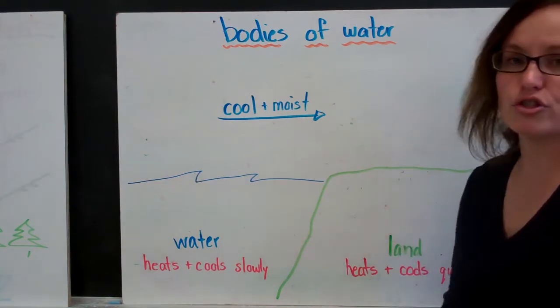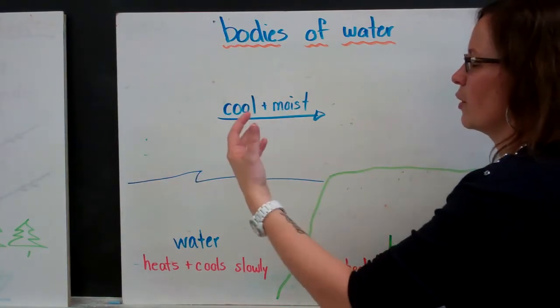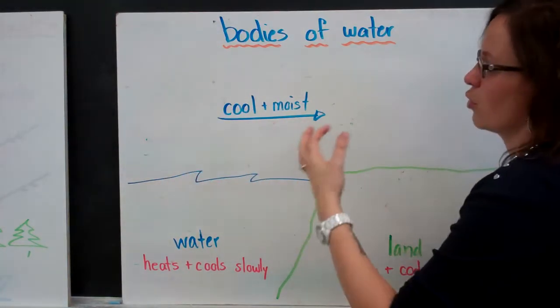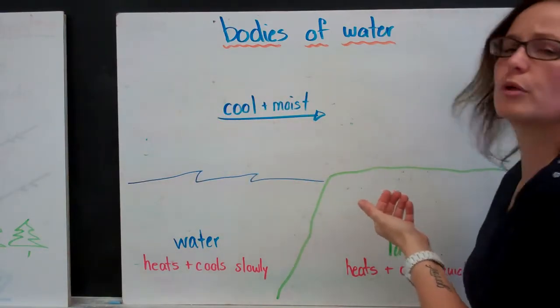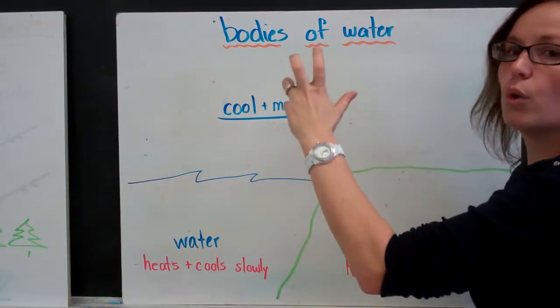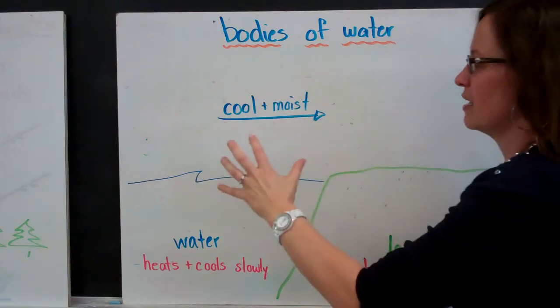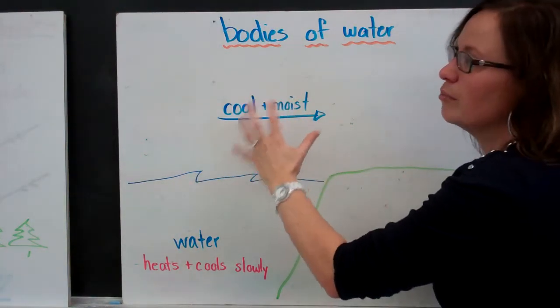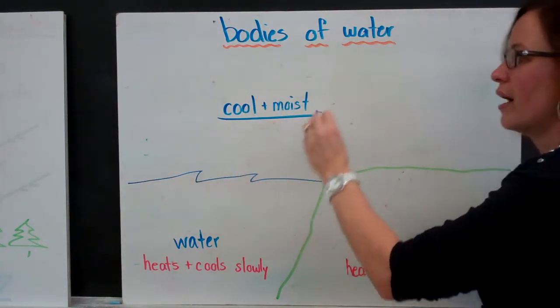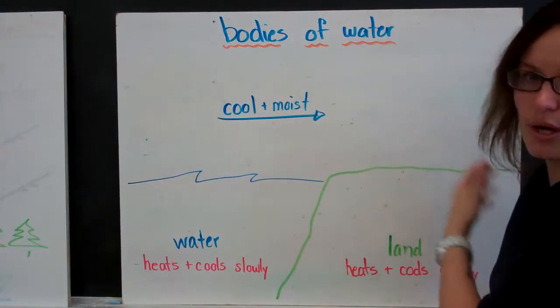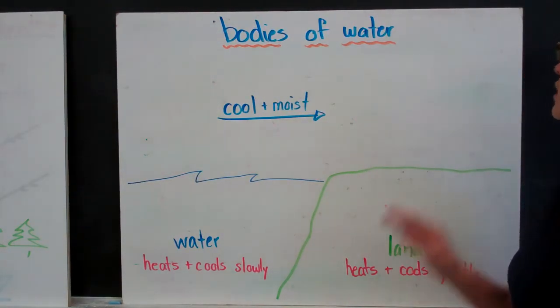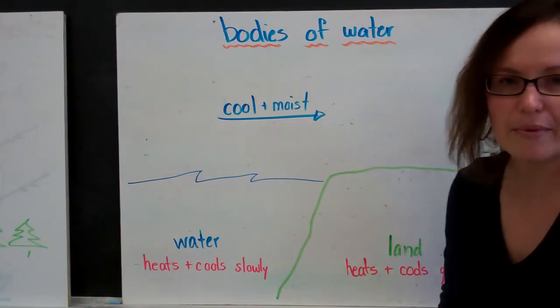This is also why when there are storms, for snow storms for example, those people who live closer to the body of water will get more precipitation because the air is most moist closest to the water. And as it drops its moisture, it becomes less moist as it travels inland. So those are your local climate factors.